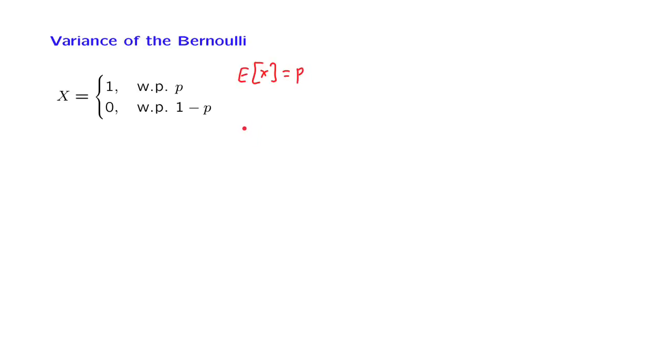One way of proceeding is to use the definition and then the expected value rule. So if we now apply the expected value rule, we need a summation over all possible values of X. There are two values, X equal to 1 or X equal to 0.